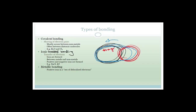In metallic bonding, you've got positive ions surrounded in a sea of delocalized electrons, and these are always within metals. For example, sodium, copper, and potassium. It is important that the type of bonds determines the physical and chemical properties of the substances.